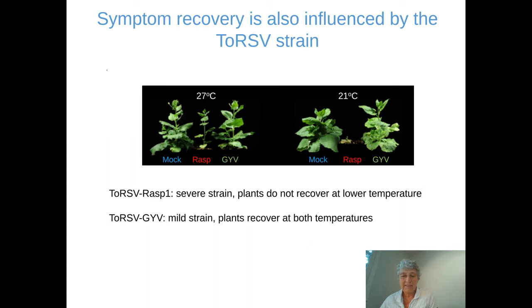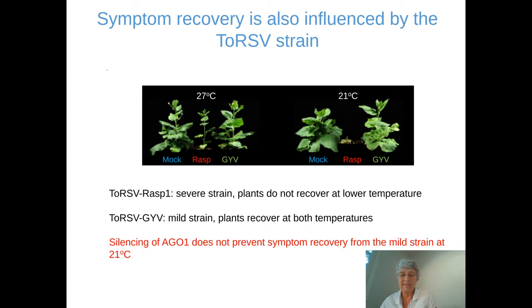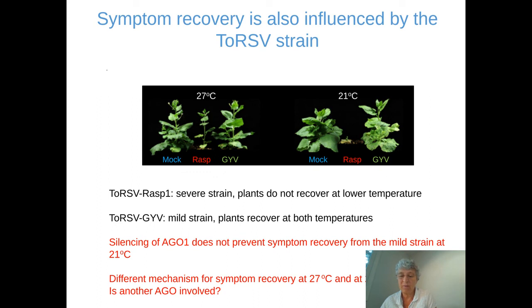We were also interested in seeing what would happen with other isolates and at other temperatures. RASP1 is the isolate I described, which recovers at 27°C but is very necrotic at 21°C. GYV is a mild strain with plants recovering at both temperatures. Interestingly, silencing of AGO1 did not prevent symptom recovery from the mild strain at 21°C, so we thought there is probably a different mechanism happening and possibly another Argonaute involved.